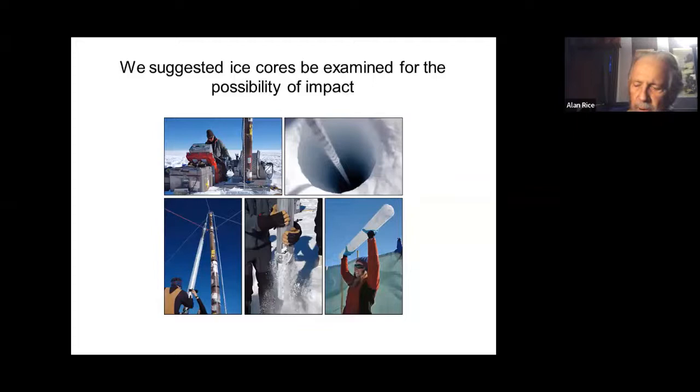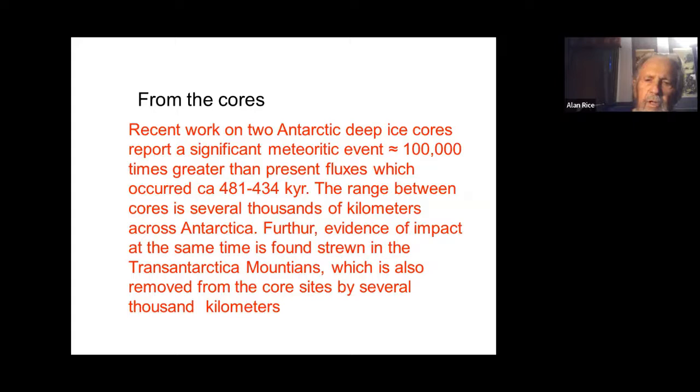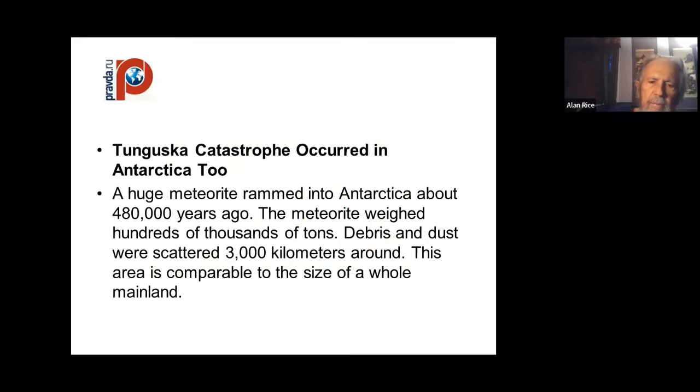Ice cores found evidence of a significant meteoritic event, a thousand times greater than present fluxes, which occurred about the time of MIS 11. The range between the cores is several thousand kilometers across Antarctica. At the same time, evidence was found strewn in the Transantarctic Mountains, which is also removed from the core sites by several thousand kilometers.